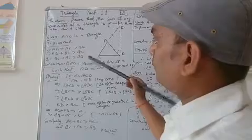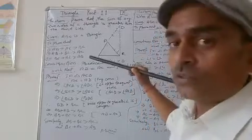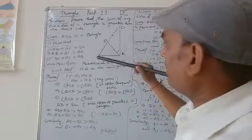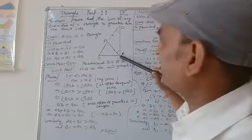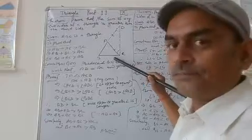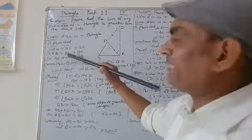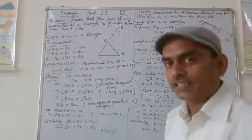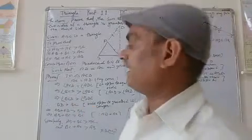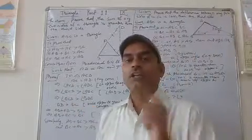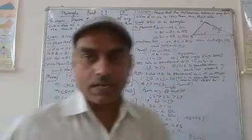Then to prove that the sum of two sides: AB plus AC is greater than the third side; AB plus BC is greater than the third side AC; and BC plus AC is greater than the third side AB. So we will prove that.